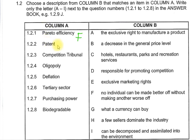What is a patent? It has to do with businesses — the exclusive right to manufacture a product. Moving on to 1.2.3, competition tribunal: the competition tribunal is responsible for promoting competition. So D is the correct answer for 1.2.3.